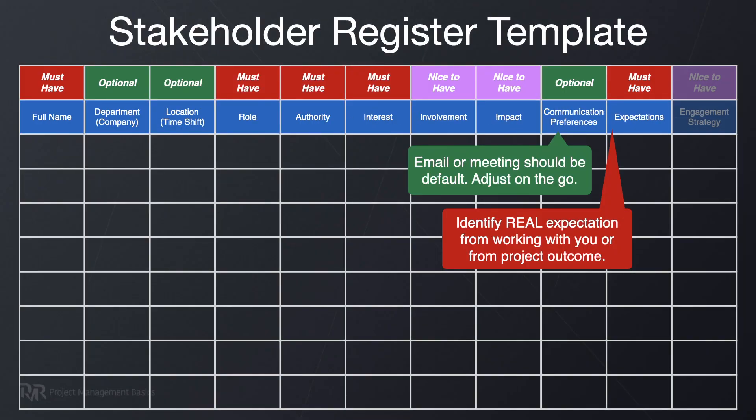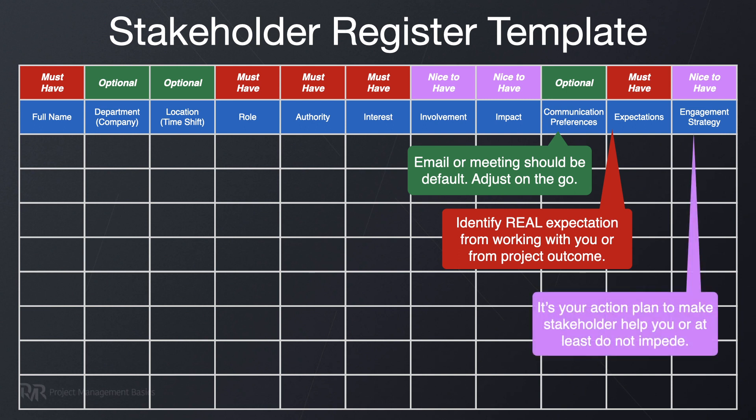That leads us to the engagement strategy column. After performing analysis, you will need to develop an action plan to gain the desired engagement level from the stakeholder. For example, it can be a continuous communication effort to keep people informed, or it can be a one-time career development offer to motivate an engineer. Any ethical and legal effort to motivate a person can become your engagement strategy.